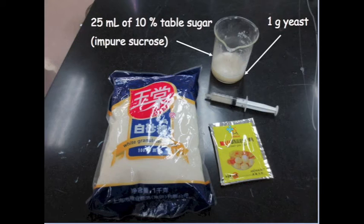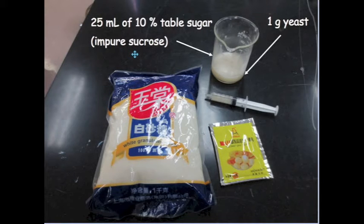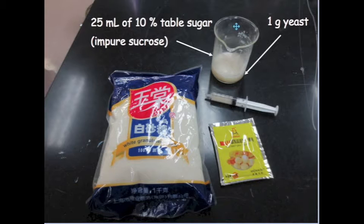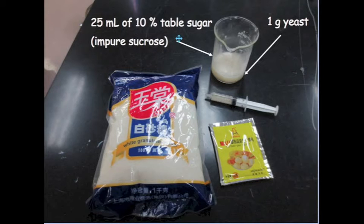The student obtained some table sugar, which is impure sucrose, and made a 10% solution, placing 25 milliliters of this solution into a beaker and then measuring out one gram of yeast, making a sugar-yeast suspension.